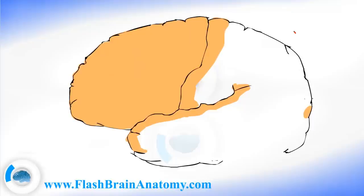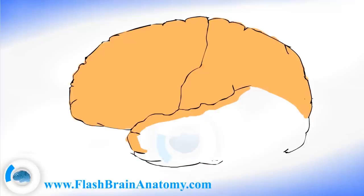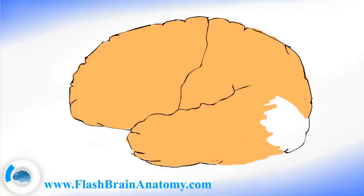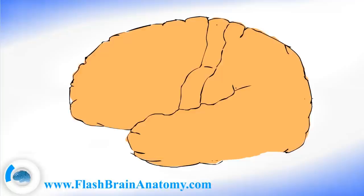The lobe over here is the parietal lobe of the brain. Then we have the temporal lobe of the brain and the occipital lobe of the brain. As I mentioned, this over here was the postcentral gyrus.